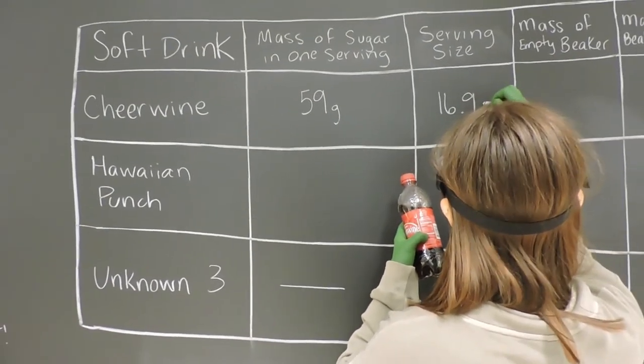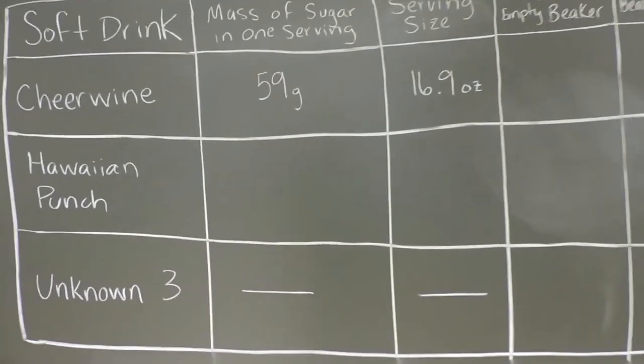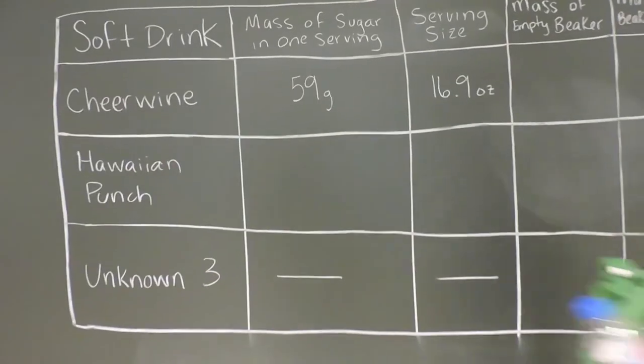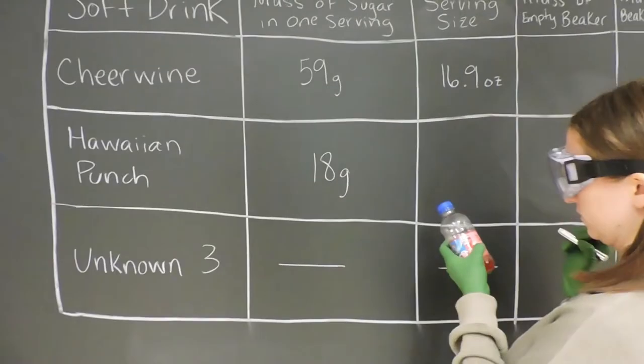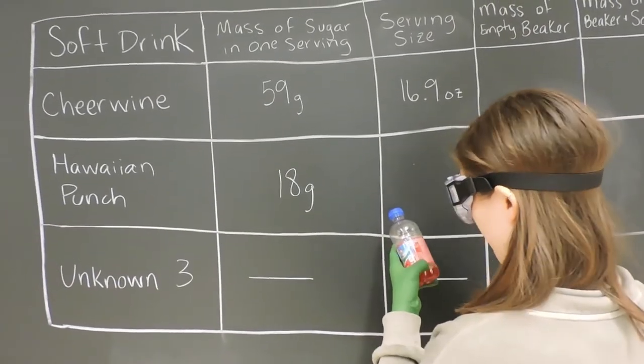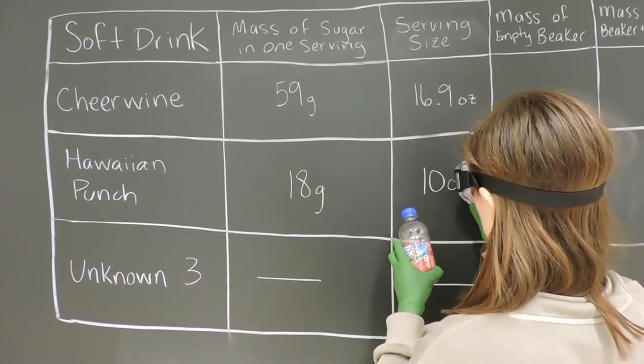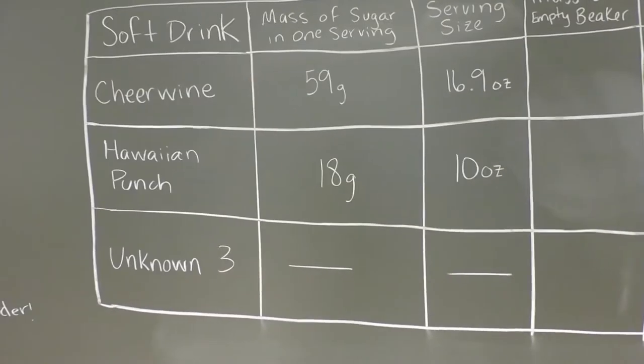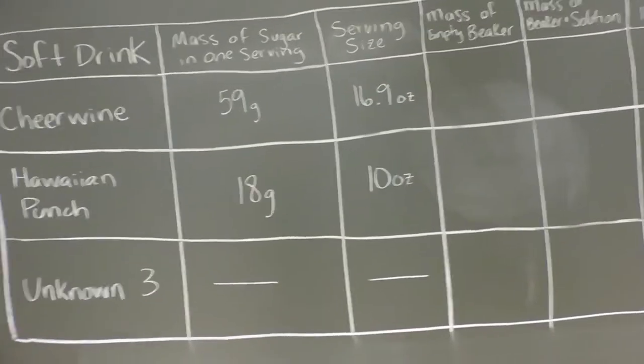It's the label on the soda. So the mass of sugar in one serving of Cheerwine is 59 grams in one serving size, which is 16.9 ounces. For Hawaiian Punch, the mass of sugar in one serving will be 18 grams. And the serving size of Hawaiian Punch is 10 ounces. For unknown number 3, we don't know the mass of sugar in one serving, so that's what we're going to find out.